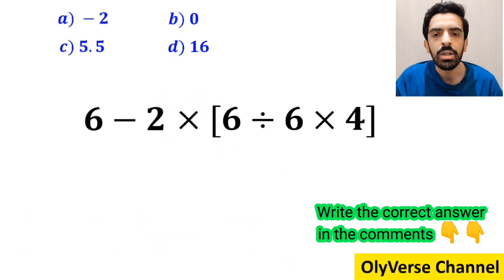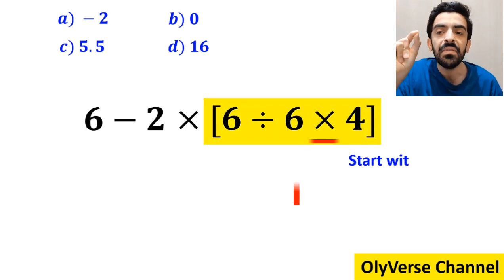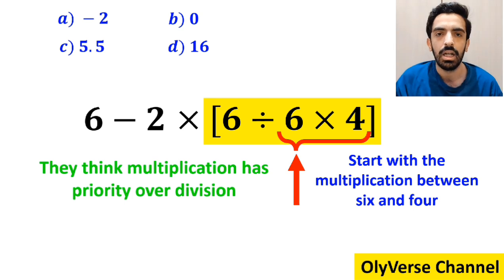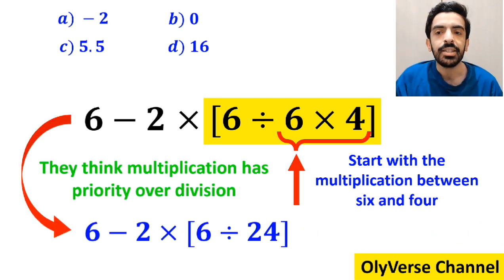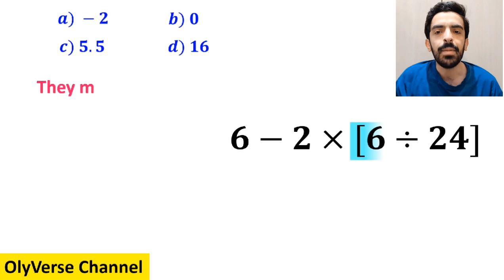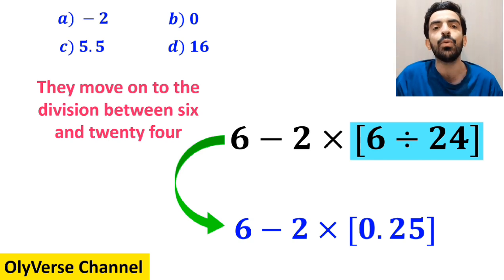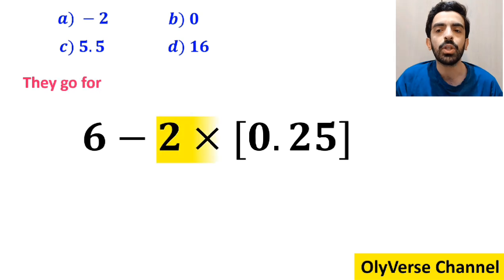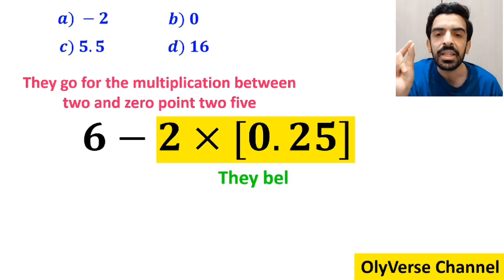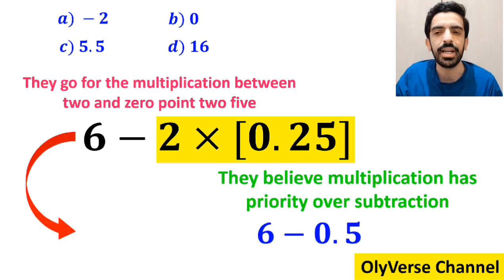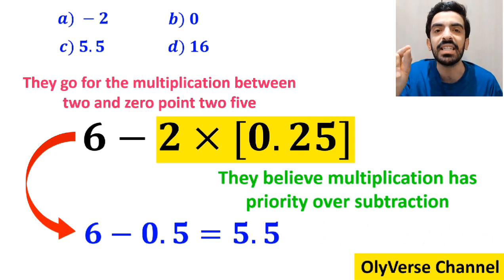Without hesitation they say that option D is the correct answer, but it's not. Some other people go straight to the expression inside the brackets and start with the multiplication between 6 and 4, because they think multiplication has priority over division. So they write 6 minus 2 times 6 divided by 24 inside the brackets, then simplify the division to get 6 minus 2 times 0.25.